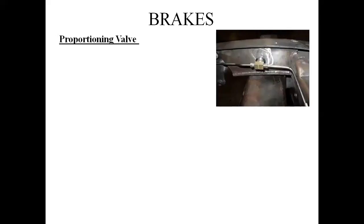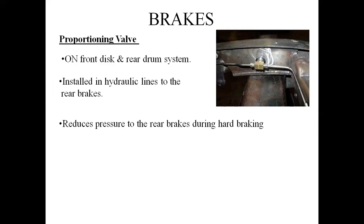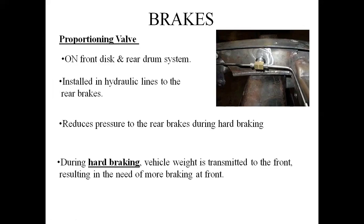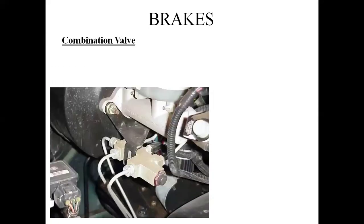The proportioning valve limits pressure to the rear brakes. Bundy tubes pass from the master cylinder toward the drum or pad. During hard braking, vehicle weight transfers to the front side. A combination valve combines these functions — lines run from the master cylinder to the rear and front sides.